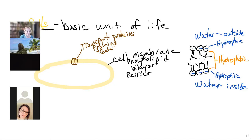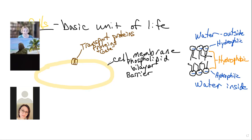So that is two things all cells have to have: the cell membrane, which is a barrier between the outside and the inside, and transport proteins that allow things to come and go in a controlled manner. That is the boundary of the cell — let's go inside.